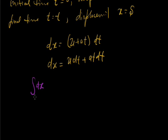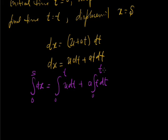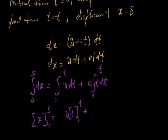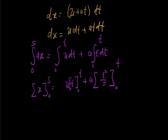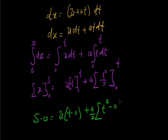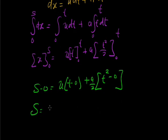Integrating dx from 0 to s equals the integral from 0 to t of u dt plus the integral from 0 to t of a·t dt. Integration gives s equal to u·t from 0 to t plus a times t squared by 2 from 0 to t. Opening the limits: s minus 0 equals u into t minus 0 plus a by 2 into t squared minus 0. So the second equation is s equal to ut plus half a t squared.